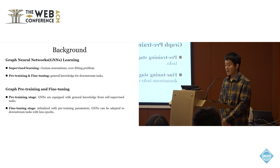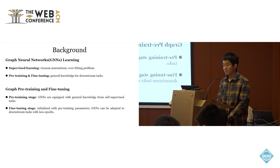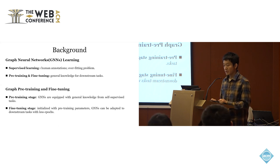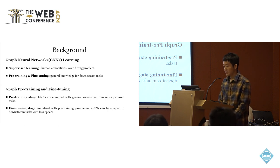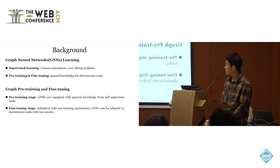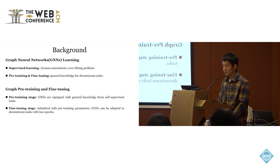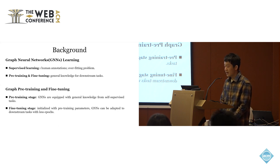Graph neural networks have achieved success in many fields such as social analysis, web mining, and recommendation systems. Traditional graph neural networks are trained under the supervised manner, which not only entails large quantity of human annotations, but also may suffer from the overfitting problem. Inspired by the successful application of pre-training models, many efforts have been paid into a new paradigm named pre-training and fine-tuning.